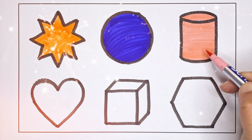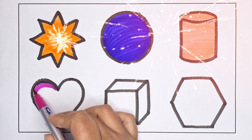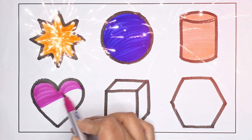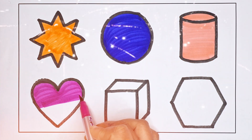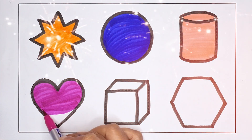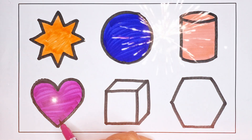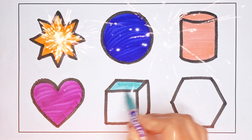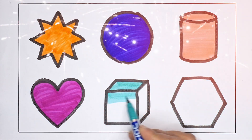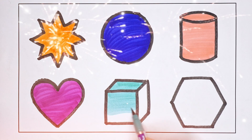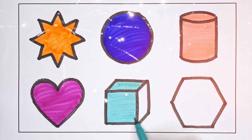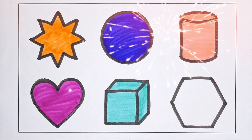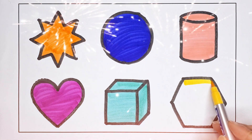Slender, Pink Color. Heart, Light Green Color. Cube, Yellow Color.